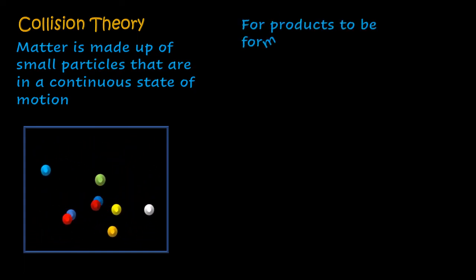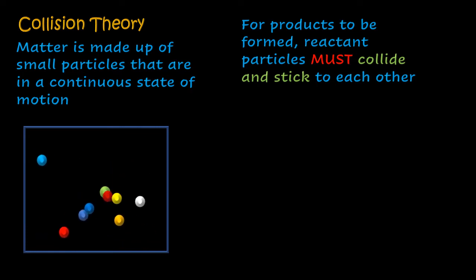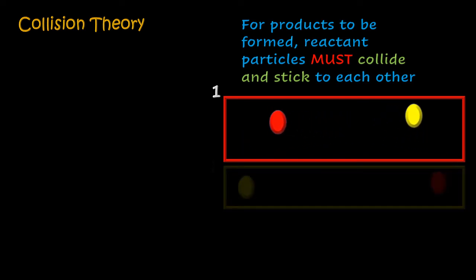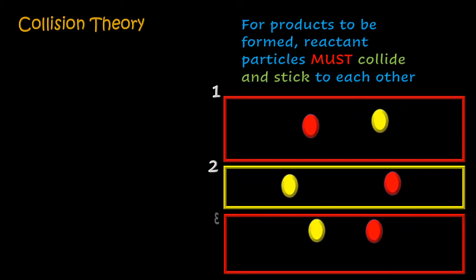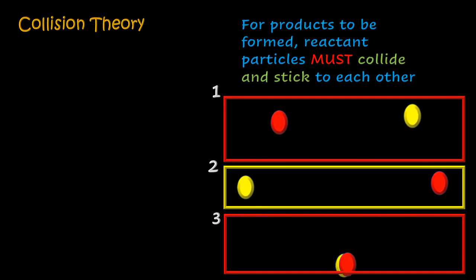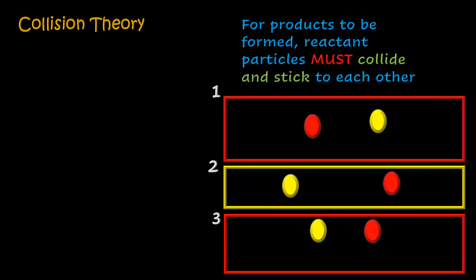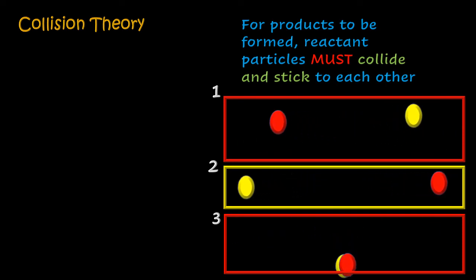The collision theory states that for products to be formed, reactant particles must collide and stick to each other. In the light of that, let us consider three scenarios: the first scenario, the second scenario, and the third scenario. Take time to look at the three scenarios and try to figure out what is happening in the light of collision theory and the formation of products.